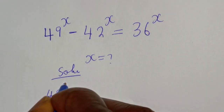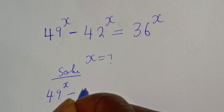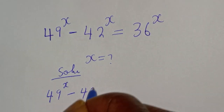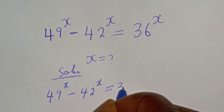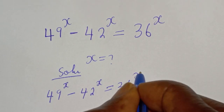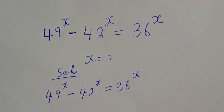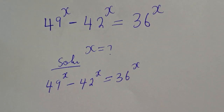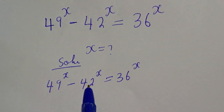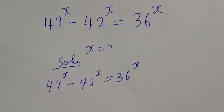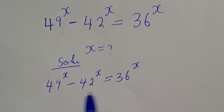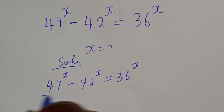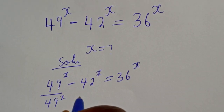49 raised to power x minus 42 raised to power x is equal to 36 raised to power x. This is 49, this is 42, and here is 36. Let's divide both sides of this equation by 49 raised to power x.